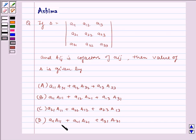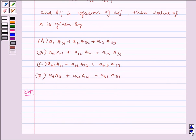Option D: a11 A11 plus a21 A21 plus a31 A31, where small a denotes the element and capital A denotes the cofactor.